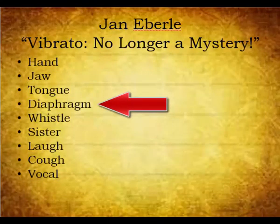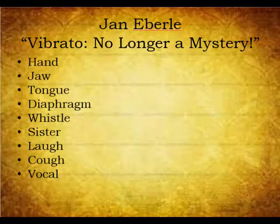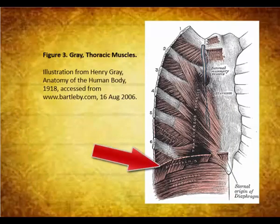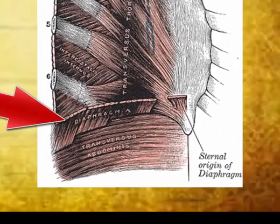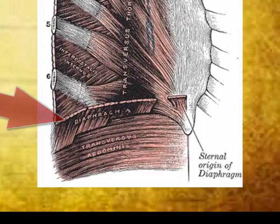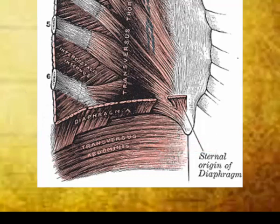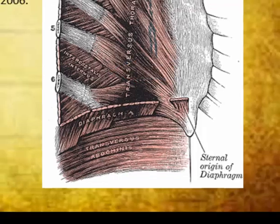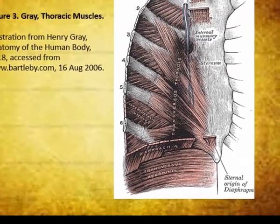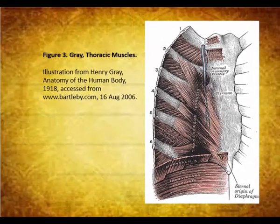The next type of vibrato is incorrectly labeled by Professor Eberle. The diaphragm is a muscle that brings air into the lungs, and physically it cannot be employed for vibrato. Instead, this vibrato should be labeled abdominal or thoracic. This vibrato is created with quick pulsings of the abdominal and intercostal muscles, which force air out of the lungs. Many wind players are told that this is the only and correct means by which to produce vibrato; however, the problem with this type of vibrato is that it is quite slow.